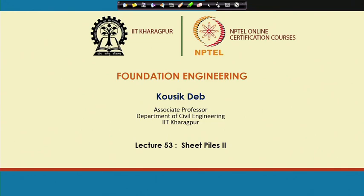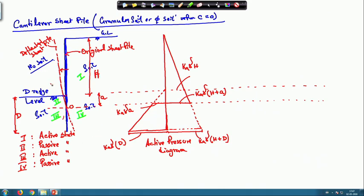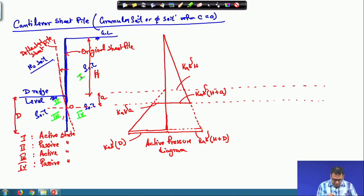Last class I was discussing about the cantilever sheet pile in granular soil. As you have noticed, there are 4 regions of that cantilever sheet pile: region 1, region 2, region 3, and region 4. Region 1 is in active state, region 2 is in passive state, region 3 is again in active state, and region 4 is in passive state.